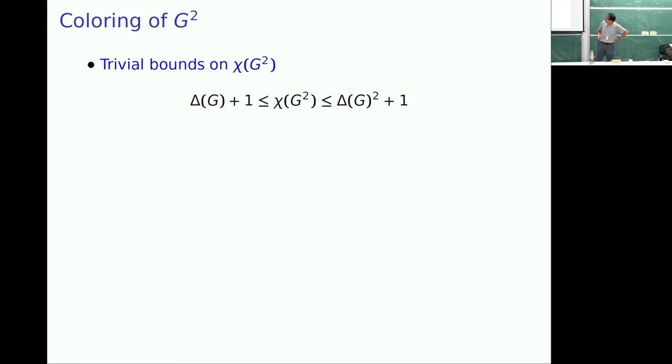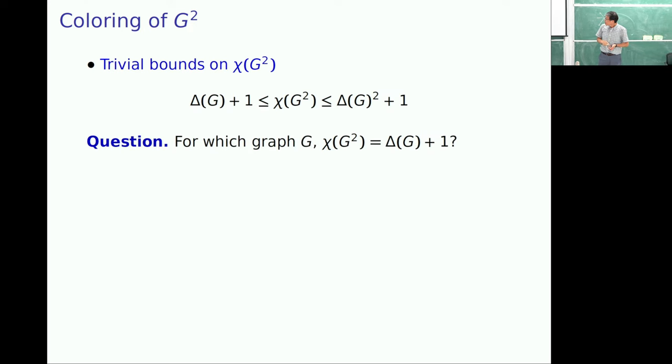And in this problem, maybe the trivial lower bound, upper bound this way. The lower bound is, well the maximum degree plus one is vertices, then every neighbor, they should have different color. That's why lower bound is delta plus one. Upper bound is the maximum possible way. And then, unfortunately, this graph, who has a lower bound or who has upper bound.